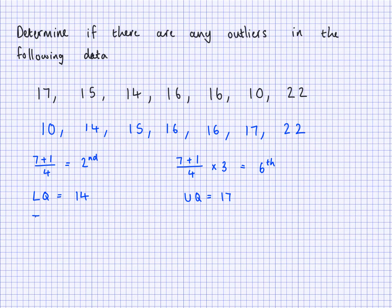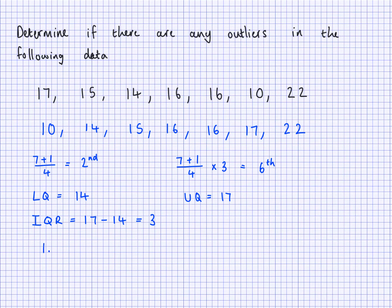The interquartile range will be the upper quartile take away the lower quartile — that's 17 take away 14, which is 3. Now, to determine if there are any outliers, we're going to multiply the IQR by 1.5. So 1.5 times 3 gives us 4.5.